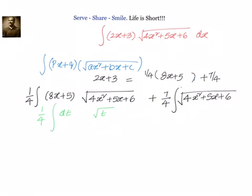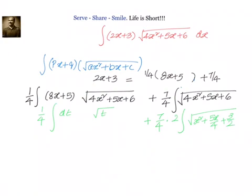So (1/4) integral of root(t) dt, plus 7/4 — we can take 4 out, so we will get 2 outside and we will have square root of (x² + 5x/4 + 6/4), which equals 3/2. Now we can handle these two problems separately, taking this as I1 and this as I2.